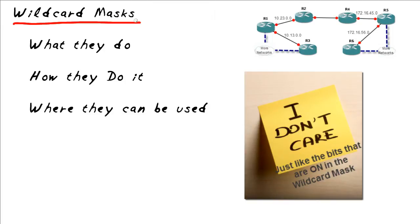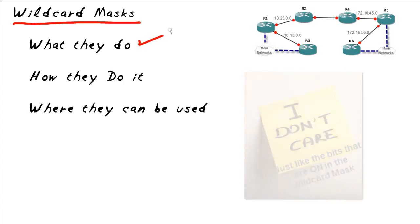A wildcard mask's responsibility is to identify some components, some portion of an IP address that we just don't care about. So that first bullet of what they do has already been identified. In this micro nugget, we're going to take a look more specifically at how they do their magic and then where they can be used as well.